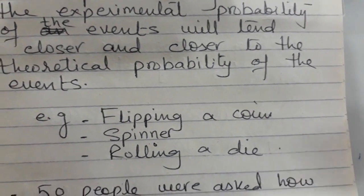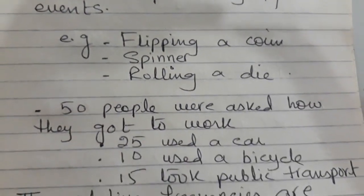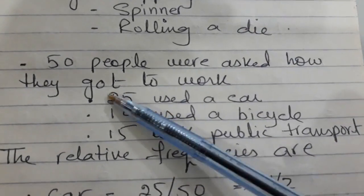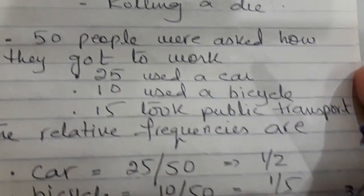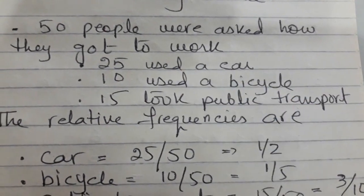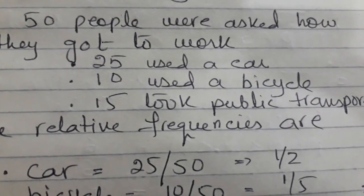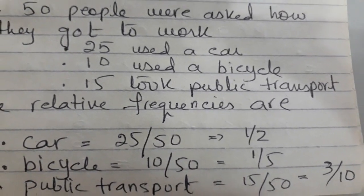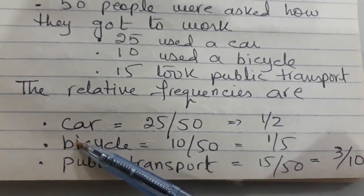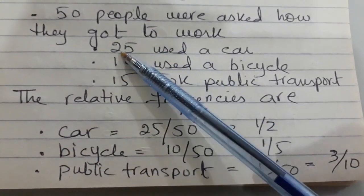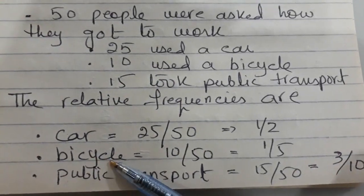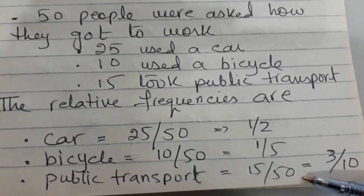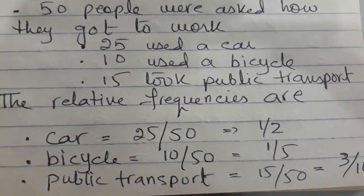You can try this with flipping a coin, spinning a spinner, or rolling a die. Here is a different example: 50 people were asked how they get to work — 25 used a car, 15 took public transport, and 10 used a bicycle. The relative frequencies are: car = 25/50, bicycle = 10/50, public transport = 15/50.